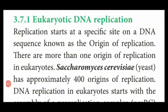Now we are going to see DNA replication in detail — replication in eukaryotic DNA. This replication process starts at a specific site known as the origin of replication. Each organism's DNA, which is double-stranded helix, has a specific site for replication called the origin of replication. In eukaryotic DNA, there is more than one origin of replication site. For example, the prokaryotic organism Saccharomyces cerevisiae (yeast) contains approximately 400 origins of replication.